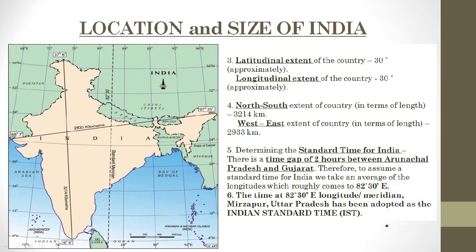Now let us understand the longitudinal extent of the country the same way. Let us focus on the longitudes of India. The westernmost longitude is 68 degrees 7 minutes east, and the easternmost is 97 degrees 25 minutes east.